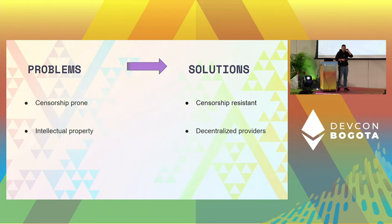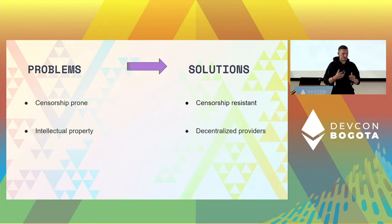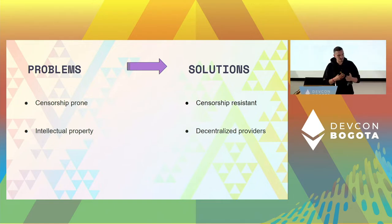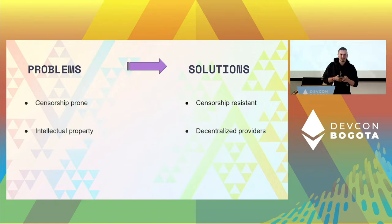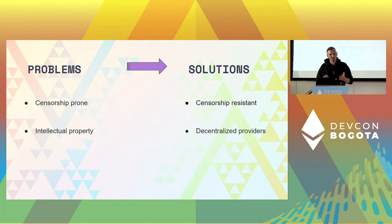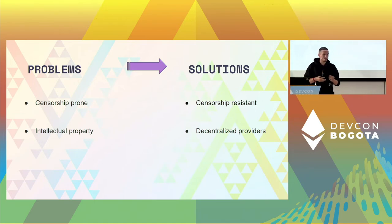The next problem with using centralized providers is intellectual property, which is tied to the censorship issue. Copyright claims can result in streams being taken down, channels being banned, and users being demonetized. But it's not only that they're taking down streams — it's the lack of transparency in the process to decide which streams get taken down and which content is shown. There's a real ethical discussion around what content we're being allowed to see.